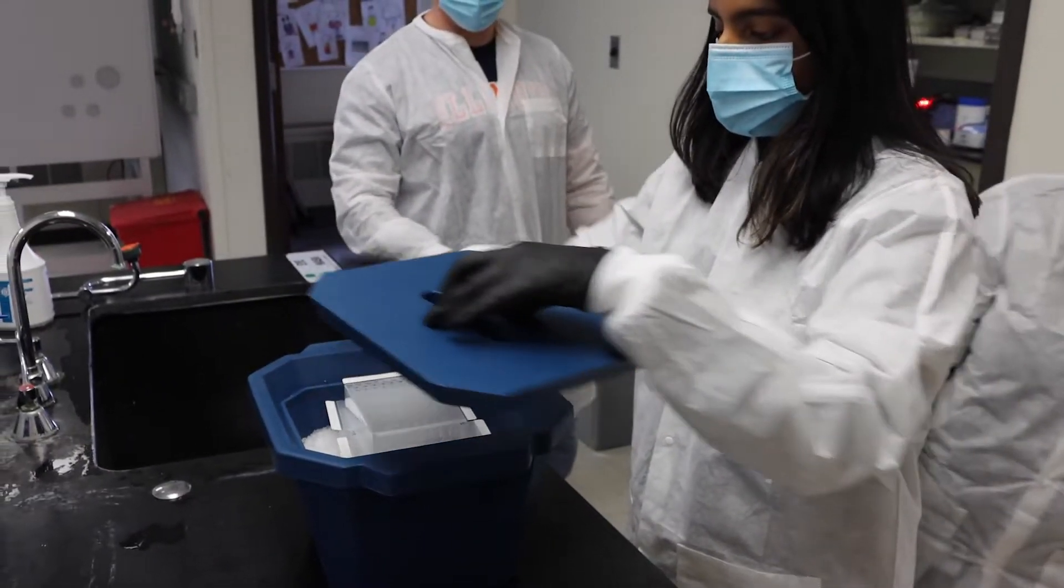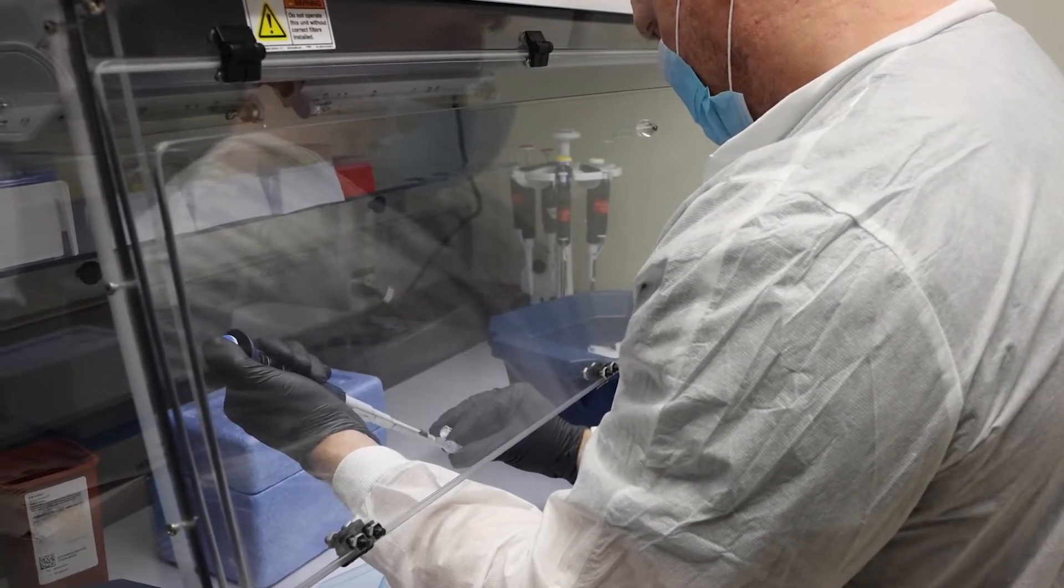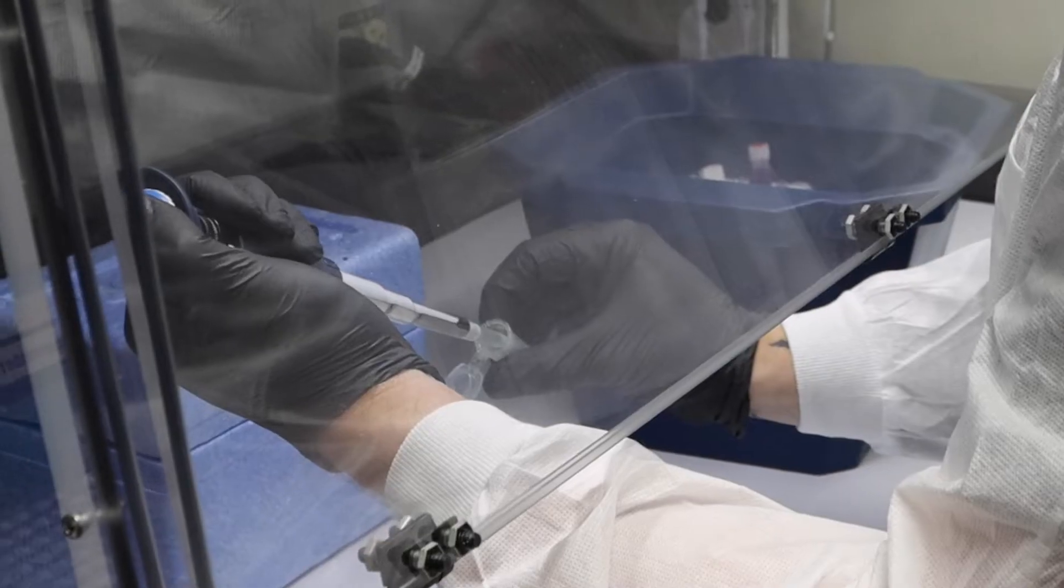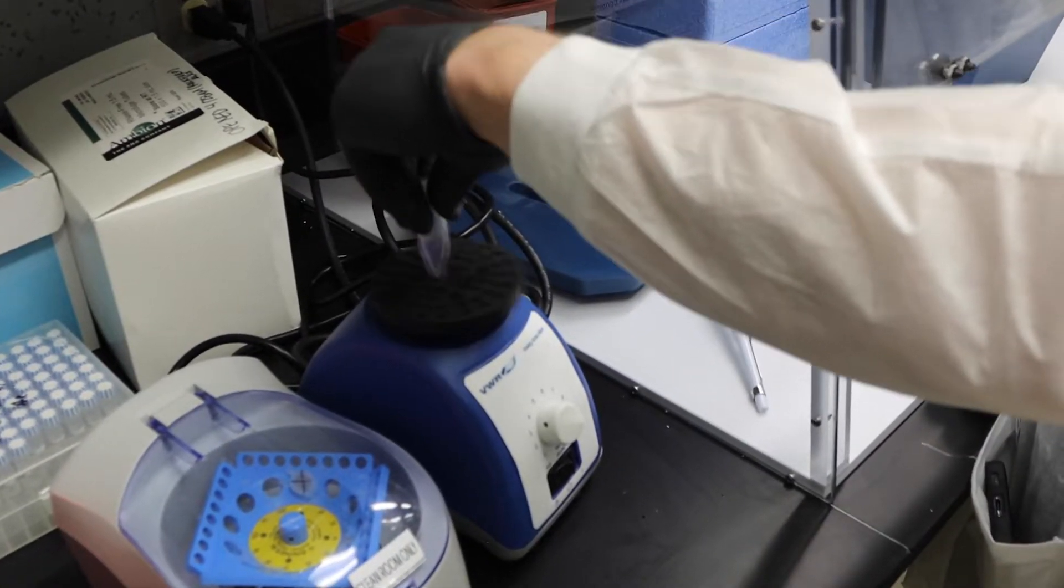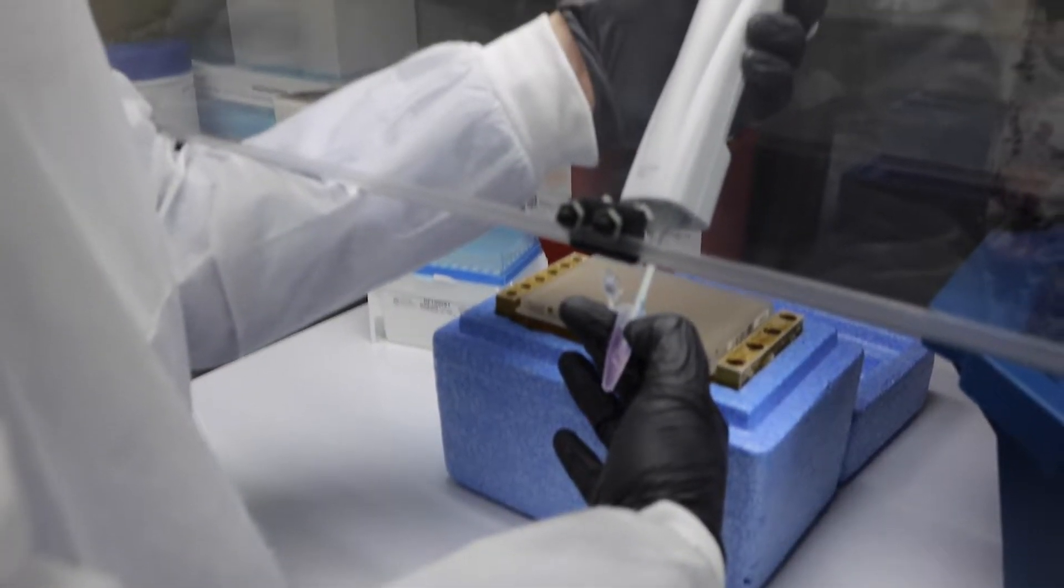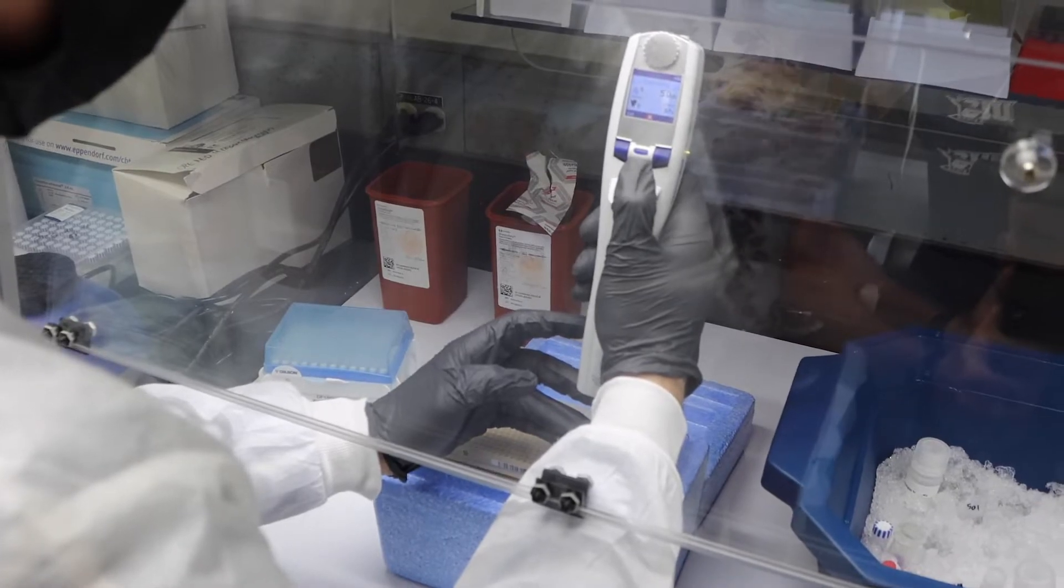The plate containing the transferred samples is placed on ice while the master mix is made. The master mix is a combination of reagents that allows detection of a positive or negative sample. A precise amount of the master mix is added to each well of 384-well PCR plate.